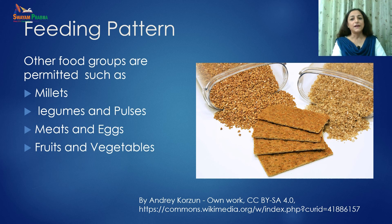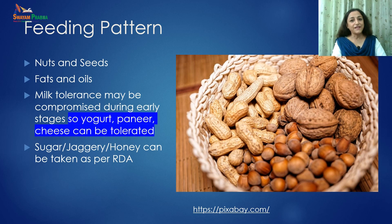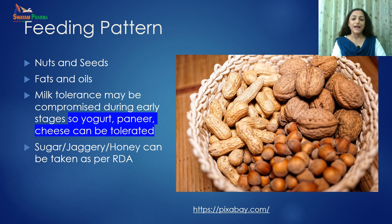A person can also take rice as a staple food. Other food groups such as legumes and pulses, meats and eggs, fruits and vegetables can be taken as per normal RDA. Nuts and seeds, fats and oils can also be taken. Milk tolerance may be compromised during early stages, so fermented milk products such as yogurt, paneer and cheese can be better tolerated. Sugar, jaggery and honey can be added to make food interesting, as per recommended dietary allowance.